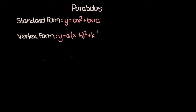Here's the main benefit of vertex form. Recall that when we're working with standard form, to find the coordinates of the vertex, we have to use the formula minus b over 2a to get the x value, and then plug in that x value into the equation to get the corresponding y value. But finding the vertex of a parabola in vertex form is a lot easier, as the name suggests. All it is, is the point h comma k, where h and k represent horizontal and vertical shifts from the origin.